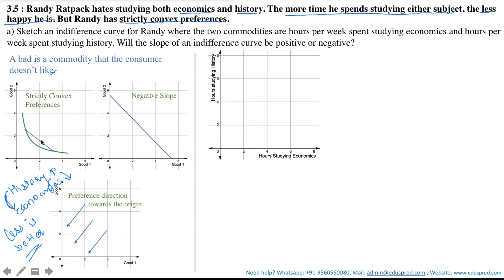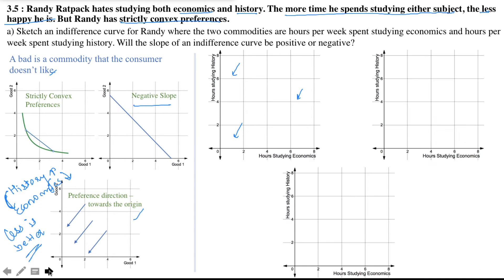With all this information — preference direction towards the origin, negative slope, and strictly convex preferences — let's try and draw the indifference curve. On the graph, we have hours of studying economics on the x-axis and hours studying history on the y-axis. Whenever we have a negative slope, three images come to mind: it could be a straight line, or it could curve one way, or it could curve the other way. Let's see which option is feasible for Randy. Let's call these case 1, case 2, and case 3.